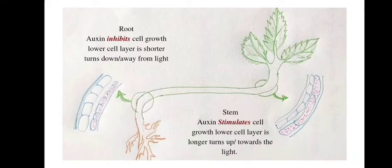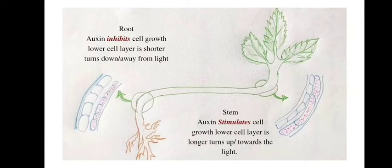In roots, auxin inhibits cell growth, so the lower cell layers are shorter and the root turns towards gravity — or away from the light source. In stems, auxin stimulates cell growth so the lower cell layer is longer and the stem turns upward towards light or away from the source of gravity. Therefore, stems are apogeotropic in nature and roots are geotropic in nature.